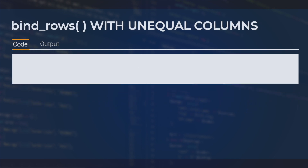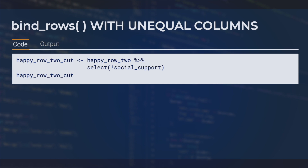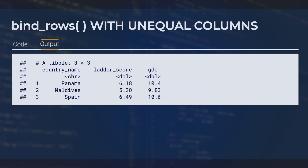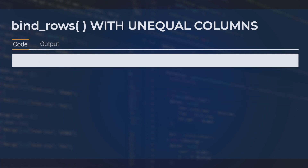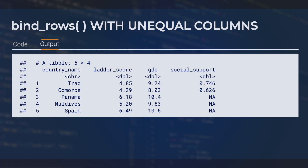bindRows can work even if the two data frames don't have the same number of columns. To demonstrate this, let's first remove the social support column from the happyRow2 data frame and save this as a new data frame called happyRow2cut. Looking at the output, we confirm that the social support column has been removed. When we apply bindRows to happyRow1 and happyRow2cut, we get this data frame. You can see that since the second data frame didn't have a social support column, this column just gets filled with NAs for rows that came from this data frame.